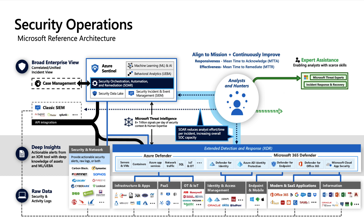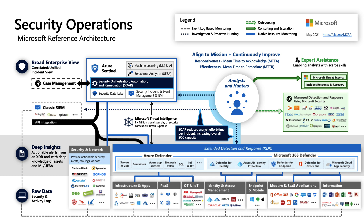Getting expert assistance when you need it is critical, because none of us is as smart as all of us. Succeeding against the connected ecosystem of attackers requires defenders to work together as a community using shared intelligence, insights, and expertise. You can leverage Microsoft Threat Experts — a managed hunting service built into Microsoft 365 Defender — for expert-level monitoring and analysis to ensure critical threats don't get missed, along with Microsoft's Detection and Response Team, or DART, for incident response and recovery, and Microsoft partners offering MDR managed detection and response services.